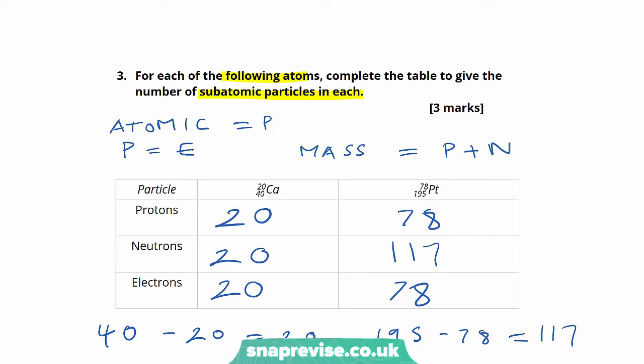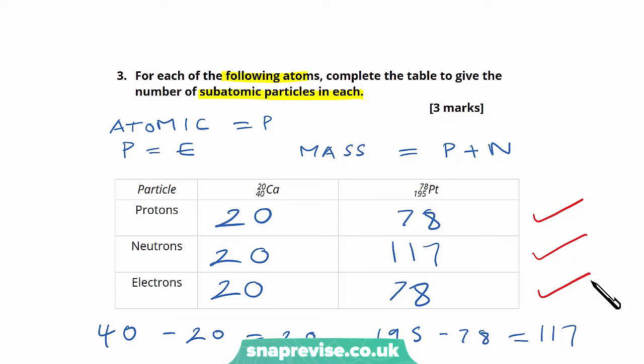This question holds three marks: one for the correct number of protons, one for the correct number of neutrons in each, and one for the correct number of electrons. Breaking down the question methodically — working through the atomic number to find protons and electrons, then using the mass number to calculate the number of neutrons — a question like this involving a few calculations is really quite straightforward.